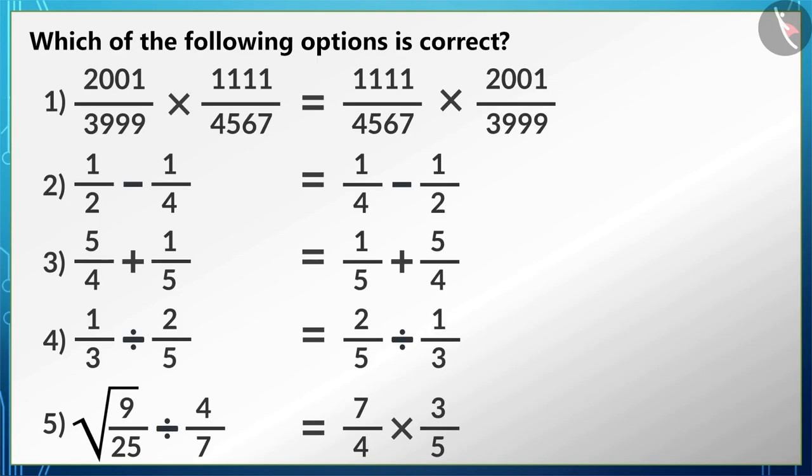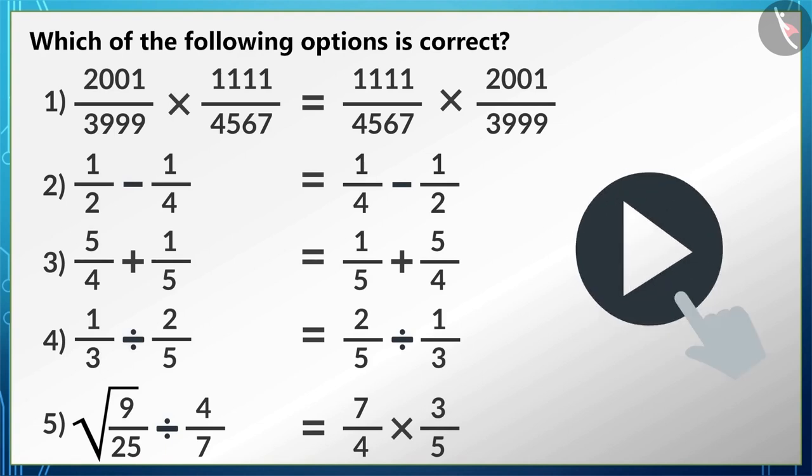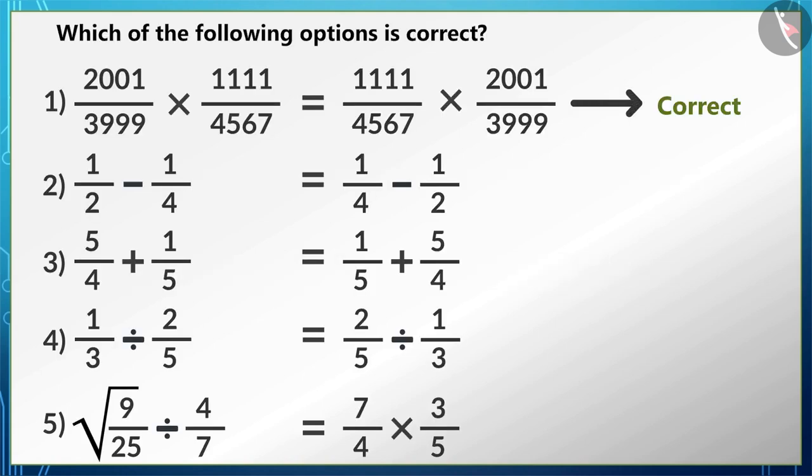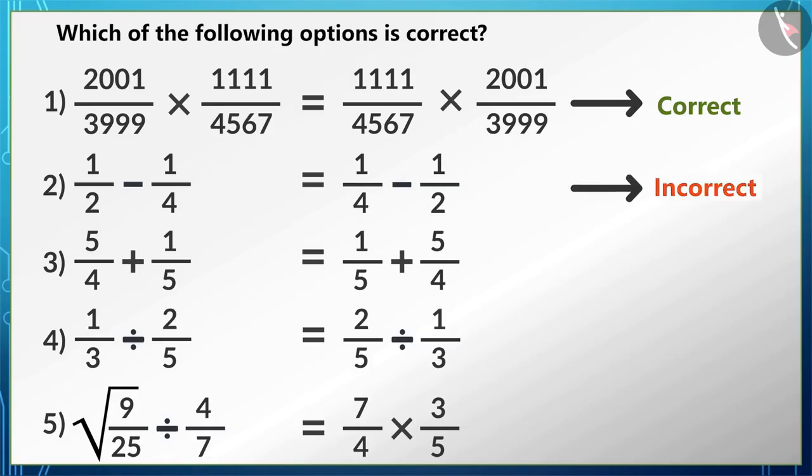All of you solve these questions. Sir, we can multiply rational numbers in any order, therefore the first option is correct. Absolutely correct. What do you think about the second option?